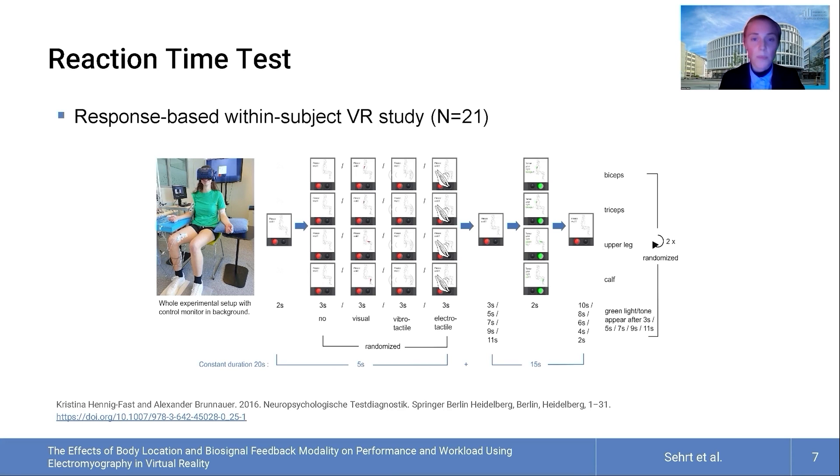The trial procedure started with two seconds resting, followed by three seconds from the pool of randomized levels of prior stimulation, which were no visual, vibrotactile or electrotactile. Then 15 seconds in which a green light and a beeping tone randomly appeared for 2 seconds after 3, 5, 7, 9 or 11 seconds.